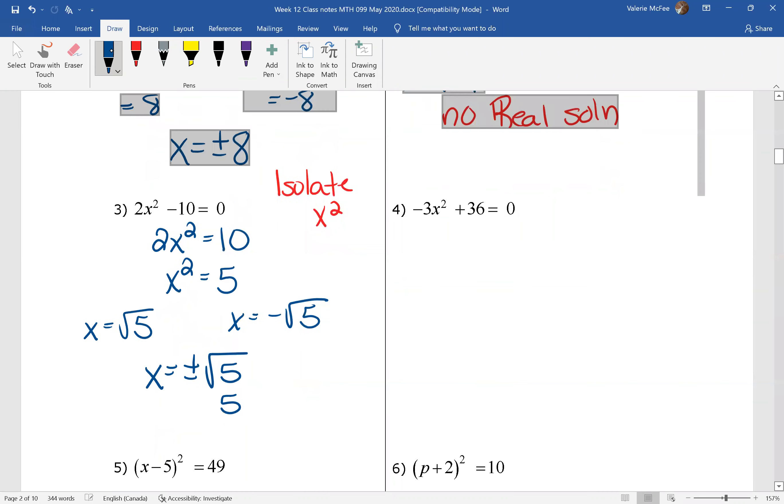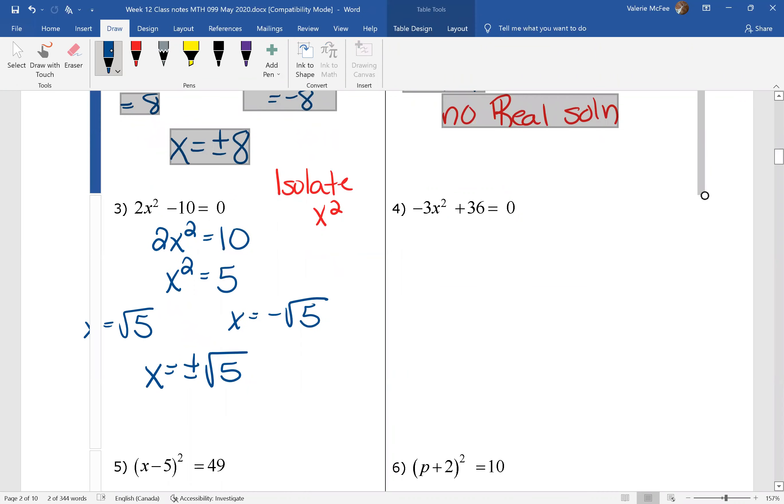Now depending on how Pearson wants you to write this, you might need to say x equals the positive square root of 5 comma and the negative square root of 5. These are all fine depending on what's being asked for.